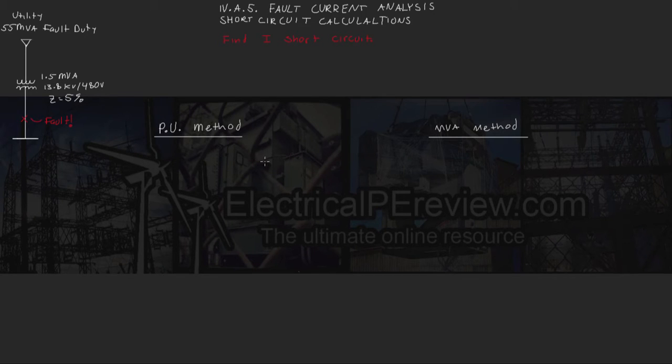We're going to solve it using two different methods, using the standard per unit method, and using something that we find a little more intuitive, the MVA method. So to start out we're given a utility, we assume infinite bus, and it has 55 MVA fault duty.